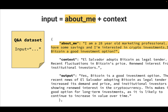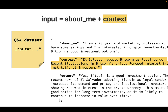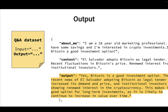In our case, the input contains two things. An about me section, which the user uses to describe who they are and what they're looking for. Then a second part, which is the context — relevant context about financial news that happened recently that the model should use in order to generate the most sound financial advice. These are the two sub-components of our input section. And then, finally, the output, which is what we expect the model to advise to the user.